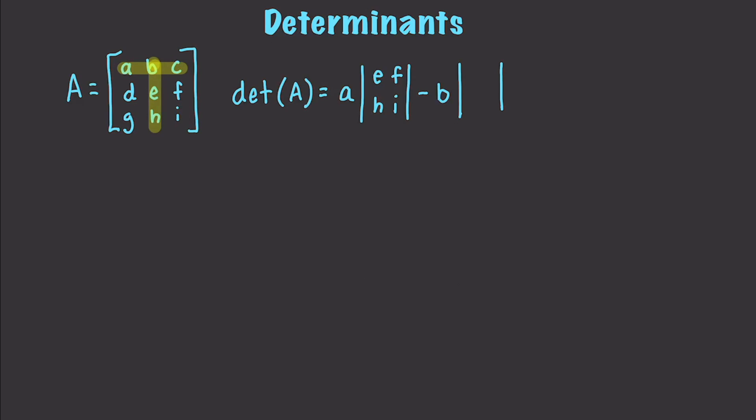And the way this is going to work is you're going to have positive, and the next one's going to be negative, positive, negative, and so forth. Then you get the determinant for everything that is not in the row of B nor the column of B. Then plus C, and we'll get D, E, G, and H exactly like that.